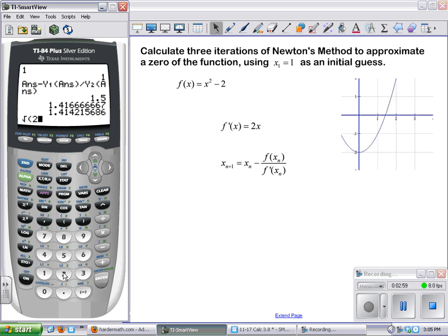That actual answer would be the square root of 2. As you evaluate square root of 2, you can see we've been pretty accurate with our guess just after four iterations of Newton's method, using the calculator to do most of the legwork for us.